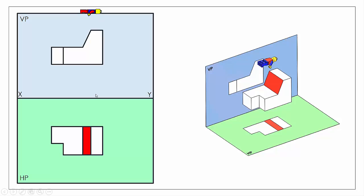So if we want to get the true shape of that object we need to maneuver ourselves so we're looking perpendicular to it and create a new view. Because we're looking in at an angle to our elevation, our next image is going to be an auxiliary plan view. That's one key difference between an auxiliary plan and an auxiliary elevation — for an auxiliary plan we're looking in perpendicular to our elevation and the resulting image is going to be a plan view.